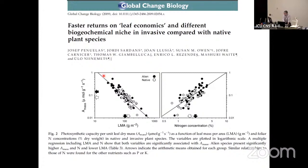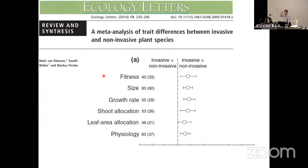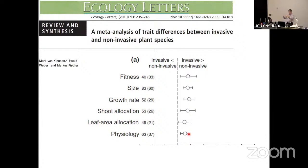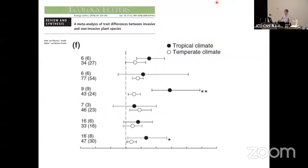There is some evidence, and there hasn't been a consistent review until now. This meta-analysis is not explicitly using the terminology of the fast-slow economic spectrum, but when you compare invasive to non-invasive: invasives have higher fitness, higher size, higher growth rates, higher shoot allocation, higher leaf area allocation, and higher physiology — meaning higher photosynthetic rates, photosynthetic capacity, etc. Joining these two concepts lets us understand that invasives really are faster.